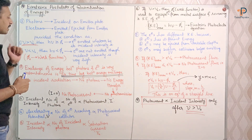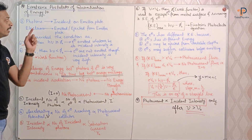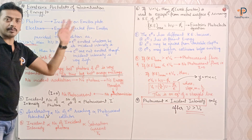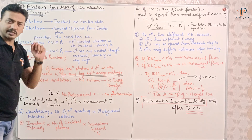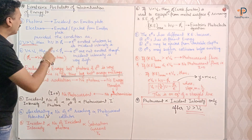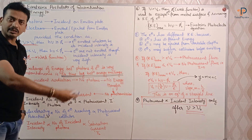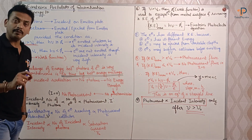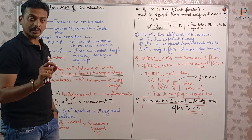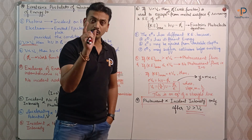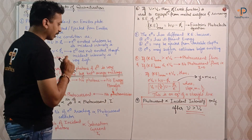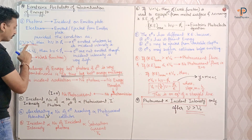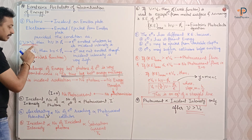The first point is that photons are incident on the emitter plate, and electrons emit and eject from the emitter plate — but only when a condition is satisfied. What is that condition? The condition is that ν (nu) must be greater than ν₀ (nu zero).